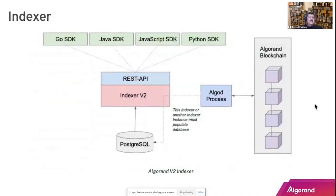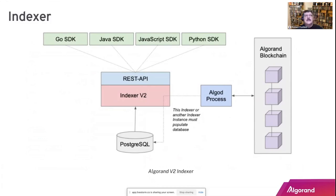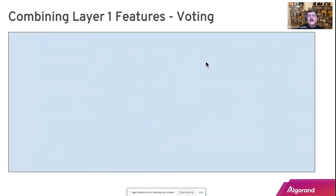The Indexer is a reporting tool that facilitates creating reporting solutions on the data housed on the blockchain. It's an Algorand process that gets written into a PostgreSQL database, and the queries run off a real database as opposed to the ledger directly — much more efficient. You can access this through all of the SDKs. The four SDKs that Algorand supports are Go, Java, JavaScript, and Python. There are many more in the community.